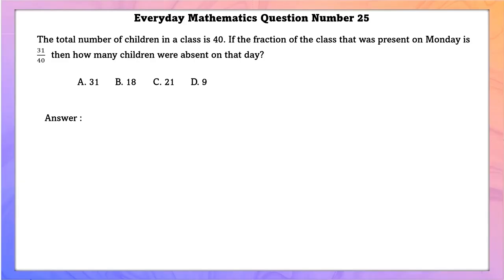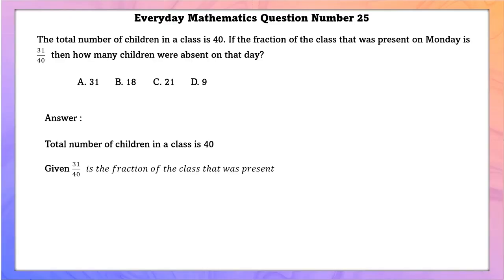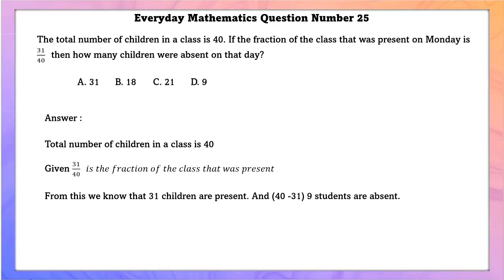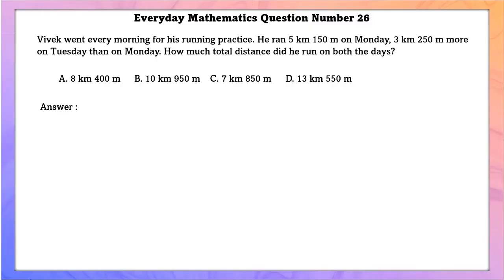Everyday Mathematics question number 25. The total number of children in a class is 40. If the fraction present on Monday is 31/40, then 31 children are present and 9 students are absent.